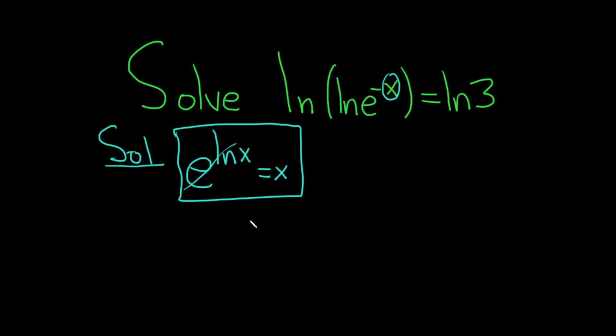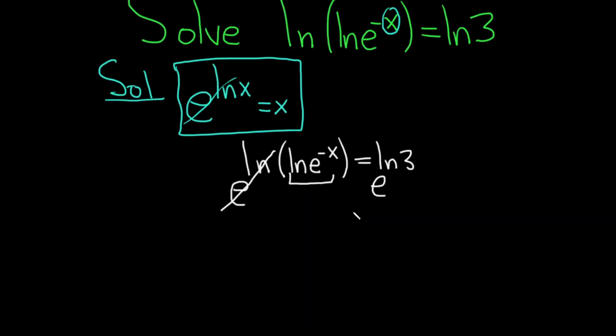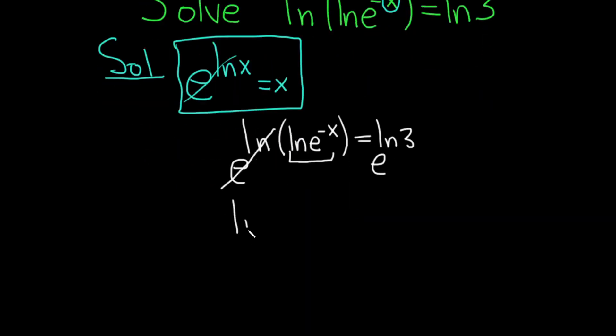So let's go ahead and write down our original equation again. We have the natural log of the natural log of e to the negative x, and that's equal to the natural log of 3. So to get rid of the natural log, we have to put an e on both sides. That process is called exponentiation. So I'm going to go ahead and put an e here and put an e here. And what happens is these go away and this entire piece here, that's your x. So we're left with the natural log of e to the negative x, and then over here, this entire piece here is your x. So that's simply 3.